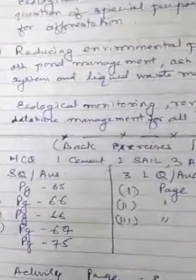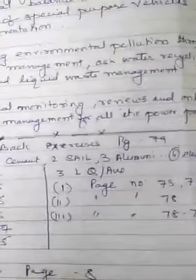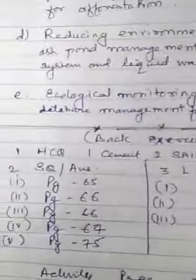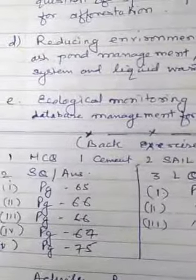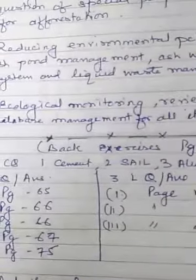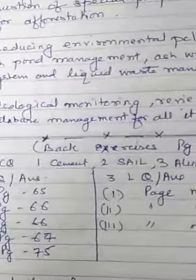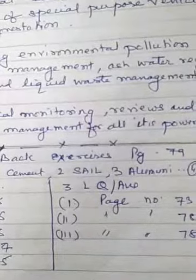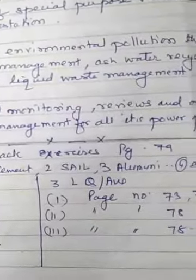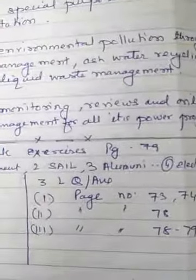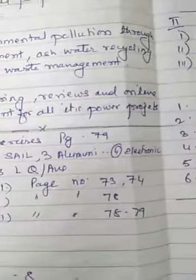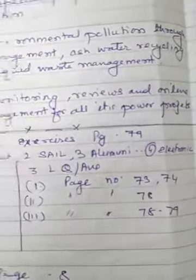Now let us discuss the back exercises of page 79. MCQ: question number 1 is cement, number 2 is sale, number 3 is aluminium, number 4 is electronic.